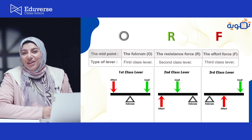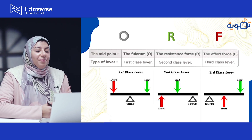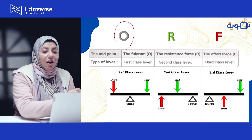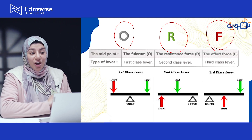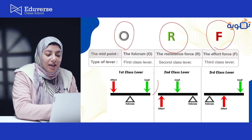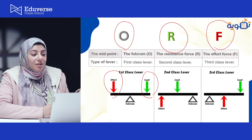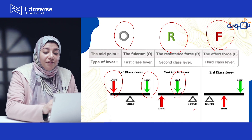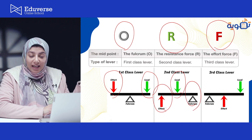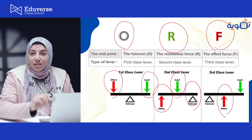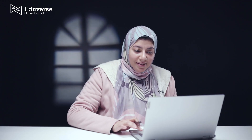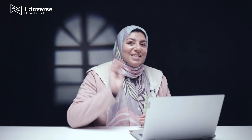To summarize: O for fulcrum, R for resistance, F for effort. When the fulcrum is located between resistance and effort, it's a first class lever. When the resistance is located between the fulcrum and effort, it's a second class lever. When the effort is located between the fulcrum and resistance, it's a third class lever. We've reached the end of our session. Hope you understood the lesson very well. Thank you so much, and see you later.